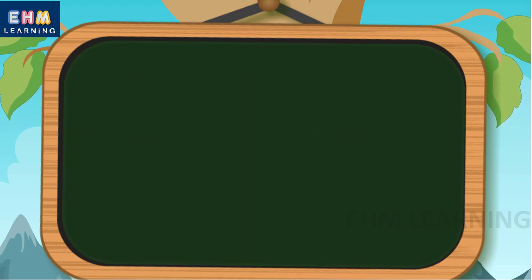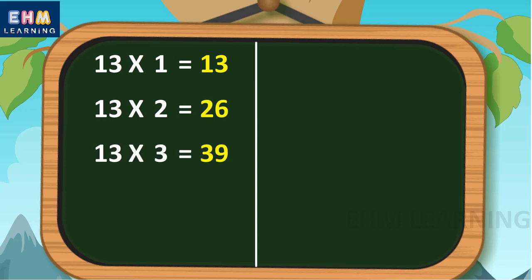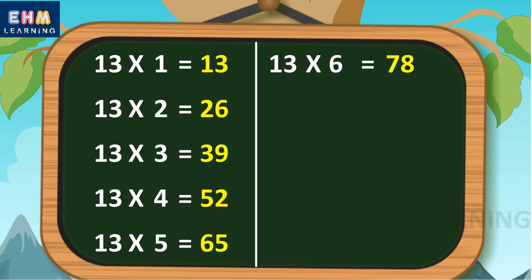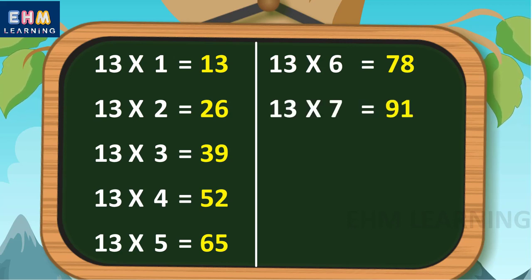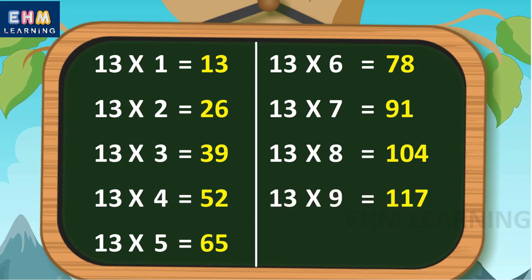Let's learn again. Thirteen ones are thirteen, thirteen twos are twenty-six, thirteen threes are thirty-nine, thirteen fours are fifty-two, thirteen fives are sixty-five, thirteen sixes are seventy-eight, thirteen sevens are ninety-one, thirteen eights are one hundred and four, thirteen nines are one hundred and seventeen, thirteen tens are one hundred and thirty.